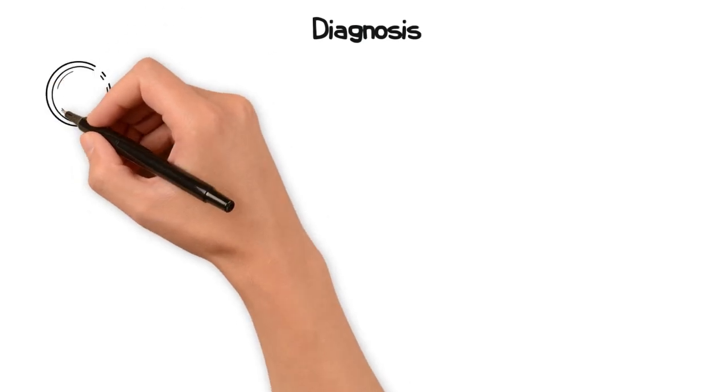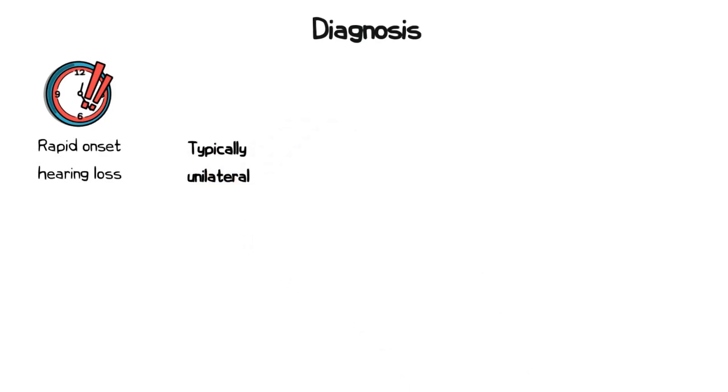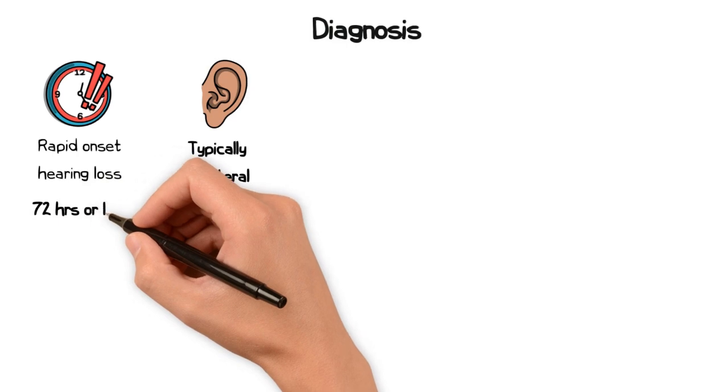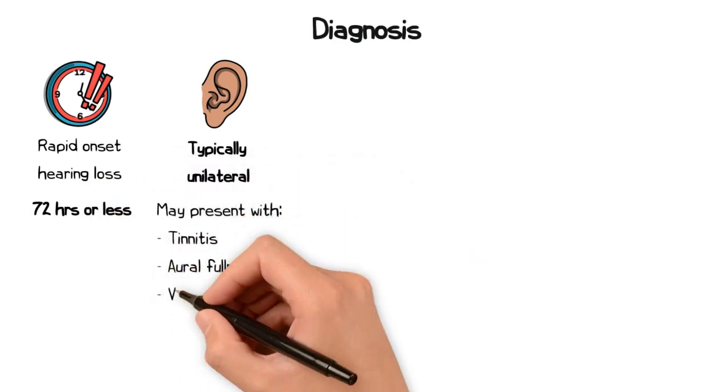Idiopathic sudden sensory neural hearing loss is characterized by rapid onset hearing loss, typically in one ear, though it can be bilateral. The hearing loss occurs over a period of 72 hours or less and may be accompanied by tinnitus, aural fullness, and sometimes vertigo.